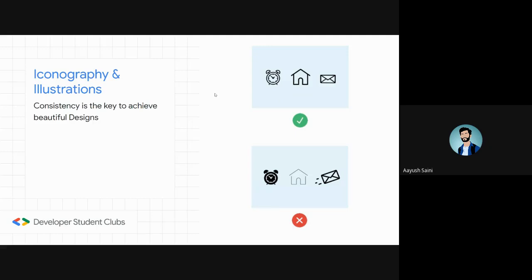For illustrations and iconography, you have to keep things consistent. Use similar, symmetrical icons — for example, line icons should all have a similar outline pattern and not be filled. If one icon is thin and another has a thick border and a third is a filled icon, they are not consistent and that will ruin the beauty of the design.